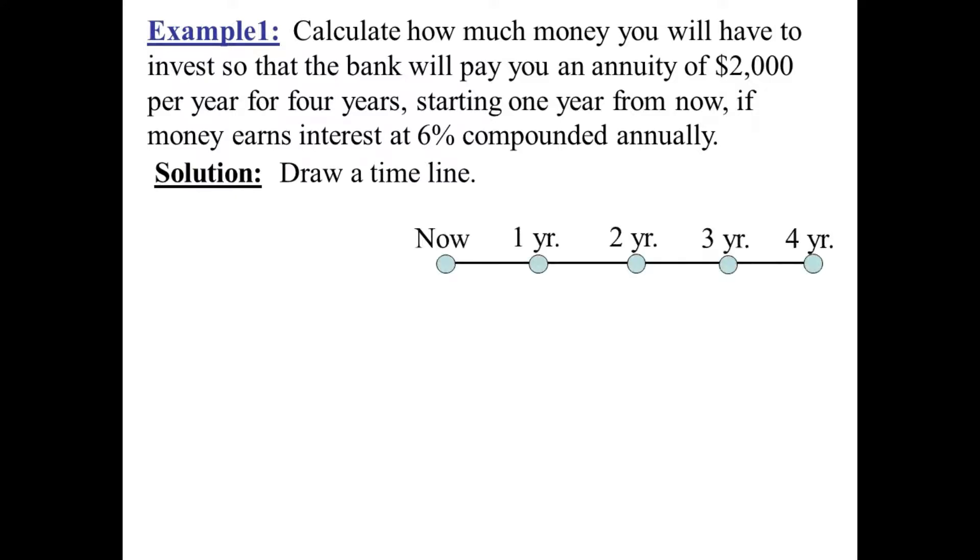Let's draw a timeline. So unlike before where I said nothing happens now, something does happen now. All the money is invested now so that that will generate 1, 2, 3, 4 payments in the future.